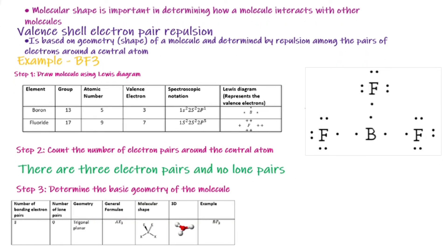Final step, step number 3 is to determine the geometry of the molecule using this table here, with A representing the central atom and X representing the terminal atoms. Since we said there are 3 electron pairs and no lone pairs, this geometry can be determined to be trigonal planar.